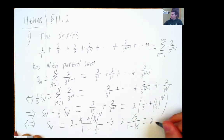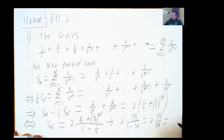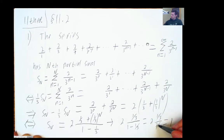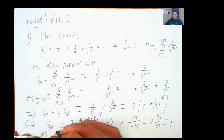Let's see. Oh, that is 1. Everything cancels. The 2 and the 2 cancel. The 1/3 and the 1/3 cancel. As capital N goes to infinity.